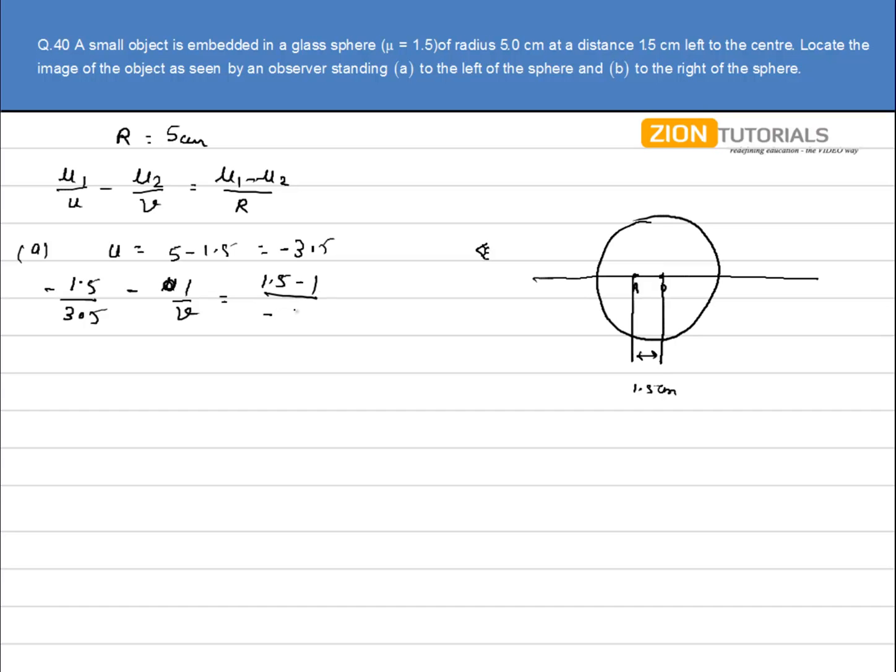So it is equal to minus of 5. So this minus is cancelled from all the sides. I have 1.5 over 3.5 plus 1 by V is equal to 0.5 by 5. So the value of V from here comes out to be minus of 3 cm.